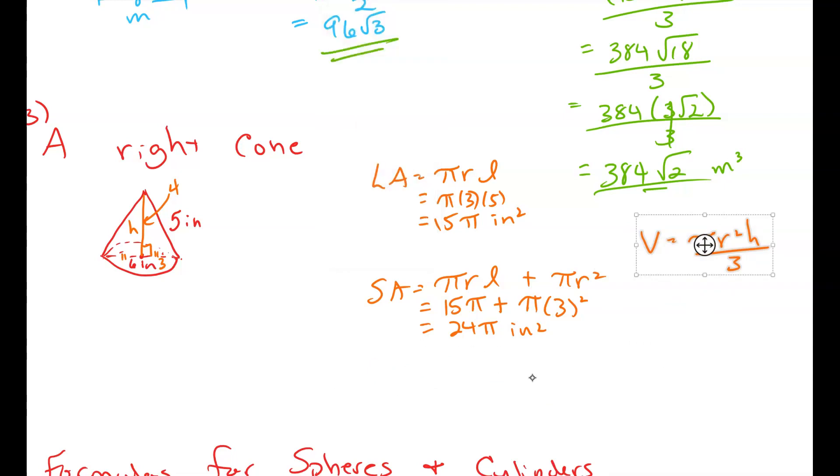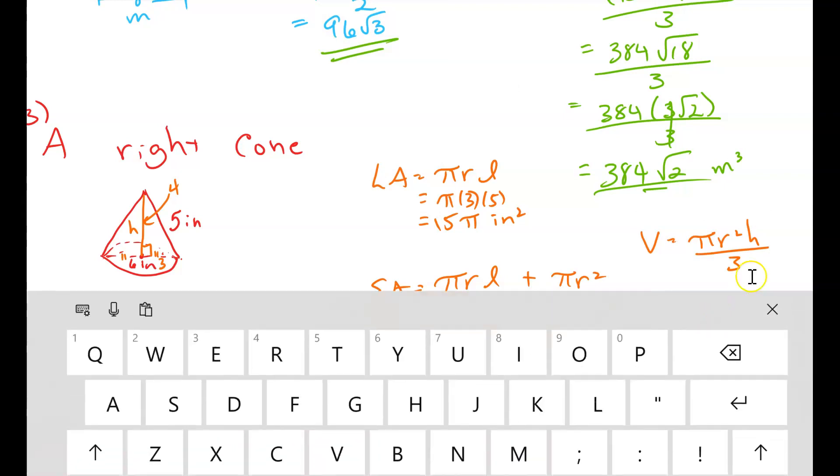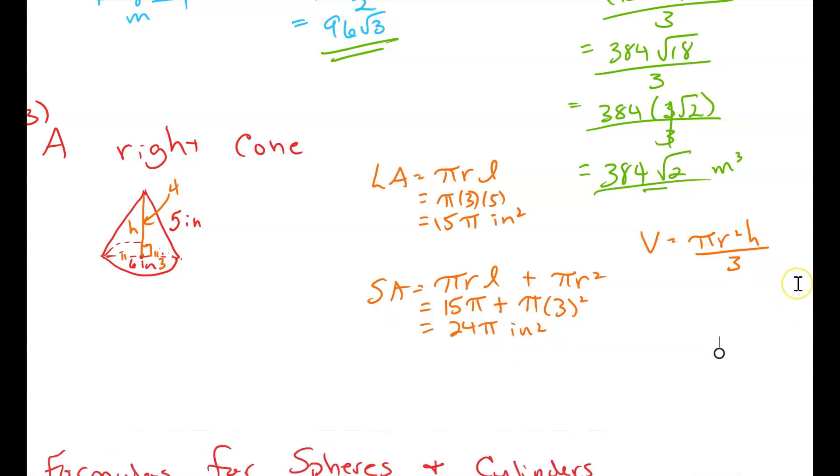And guys, I'm going to move this over so I have a little more space to work directly below it. And so we plug in what we know. We know pi. Our radius ends up being 3 squared. Our height is 4 all over 3. And that simplifies down, my friends, until 12 pi cubic inches.